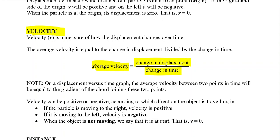Velocity can be positive or negative according to direction. From the origin, going right is positive and going left is negative, for both displacement and velocity. When an object is not moving — at rest — the velocity is equal to zero.